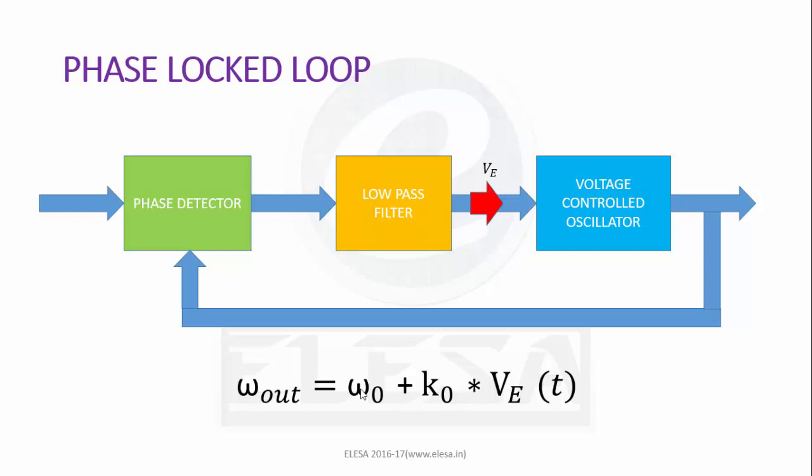If a periodic input is applied to the PLL with frequency ω_in sufficiently close to the free running frequency ω_0, an error voltage V_E will develop which will adjust ω_out until V_out becomes synchronized with V_in. That is, for every input cycle there is one and only one VCO cycle. At this point the PLL is said to be locked on the incoming signal.